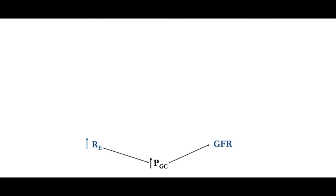A flow chart summary: increasing resistance on the efferent side elevates hydrostatic pressure in the glomerular capillaries, which has a positive effect on GFR. However, slowing renal blood flow concentrates colloid osmotic pressure in the glomerular capillaries, which has a negative effect. Whichever effect dominates depends on the degree of resistance. At moderate efferent constriction, the hydrostatic effect dominates and GFR increases.